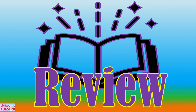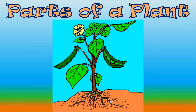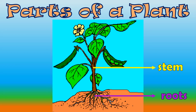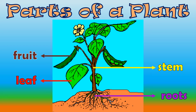Let's review! The five main parts of a plant are: Root, Stem, Leaf, Fruit, and Flower.